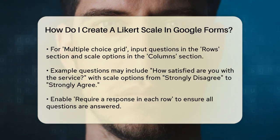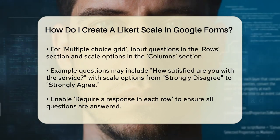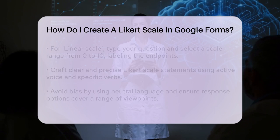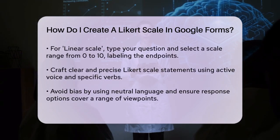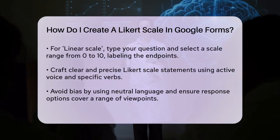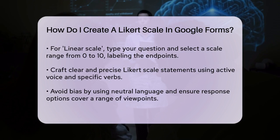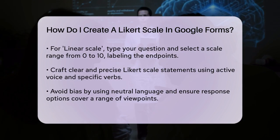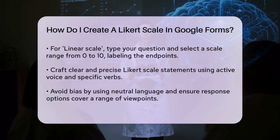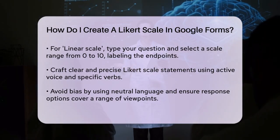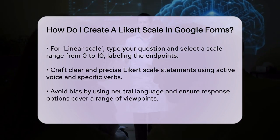For a linear scale, type out your question and select the number of points you want on your scale, which can range from 0 to 10. You can label the first and last points, but respondents will have to infer the labels for any options in between.